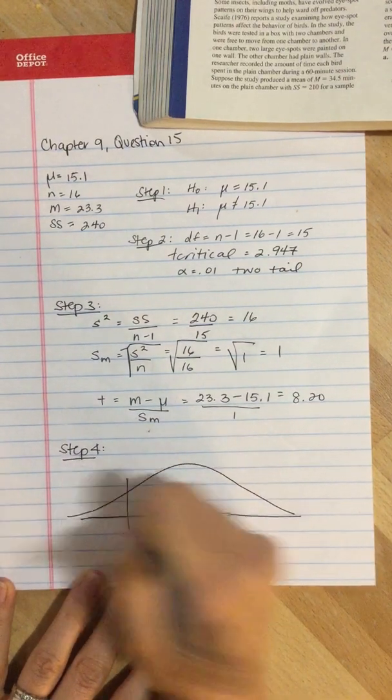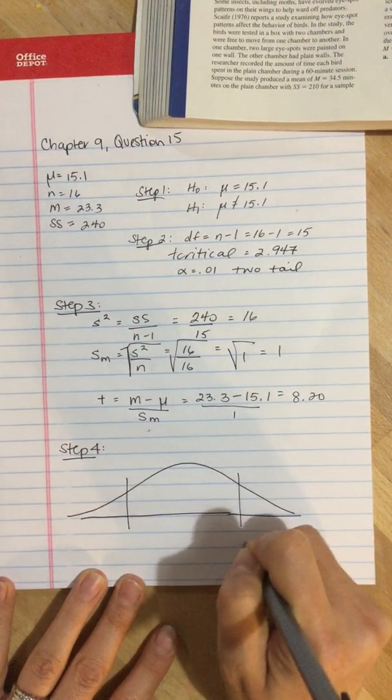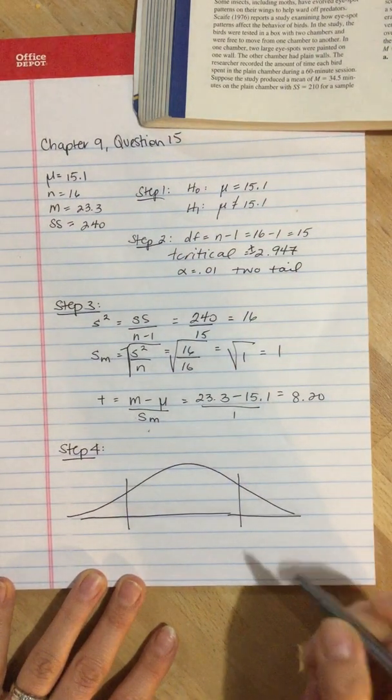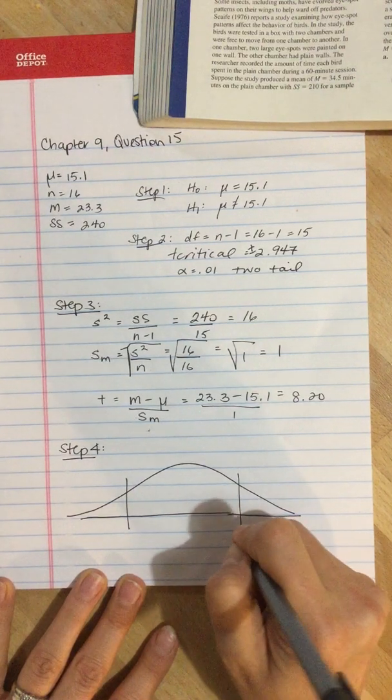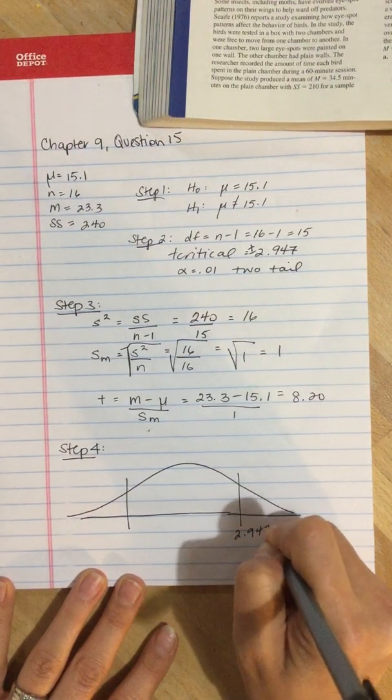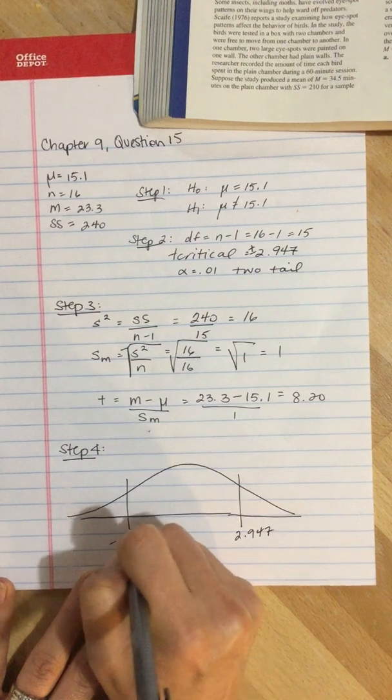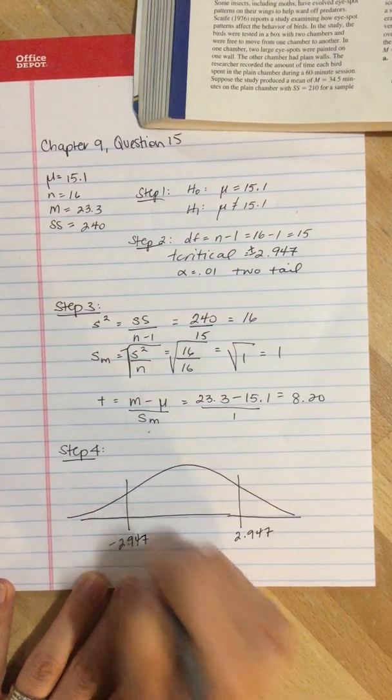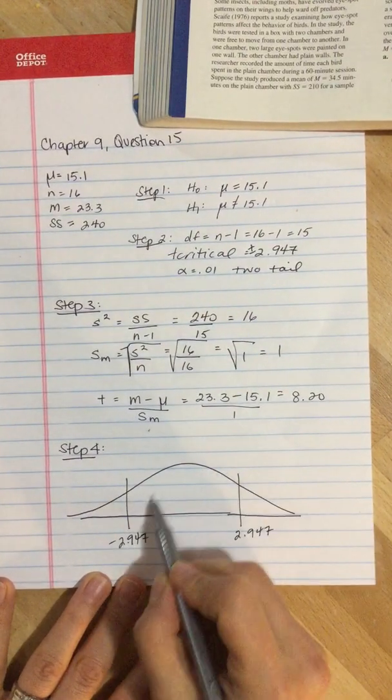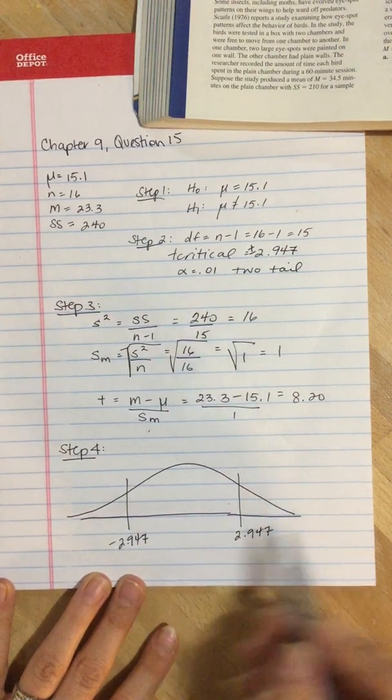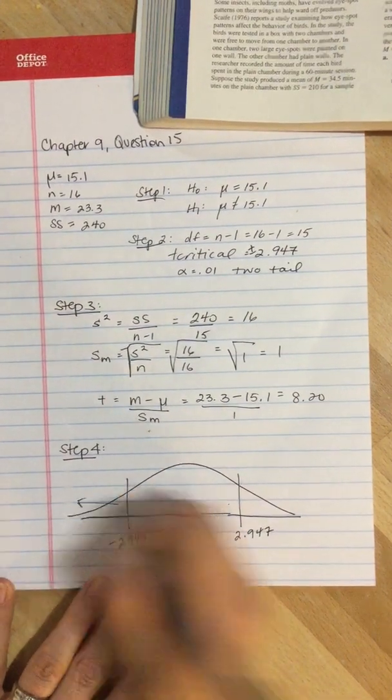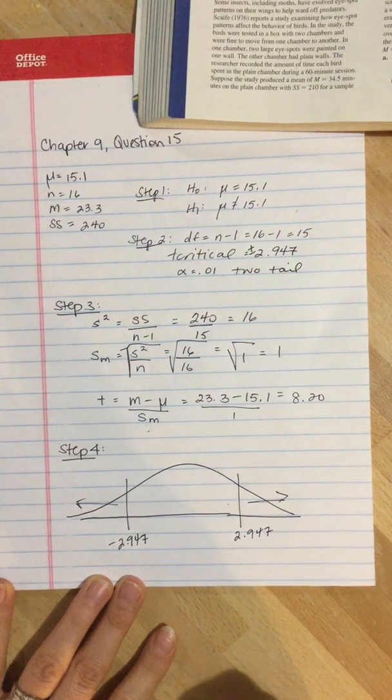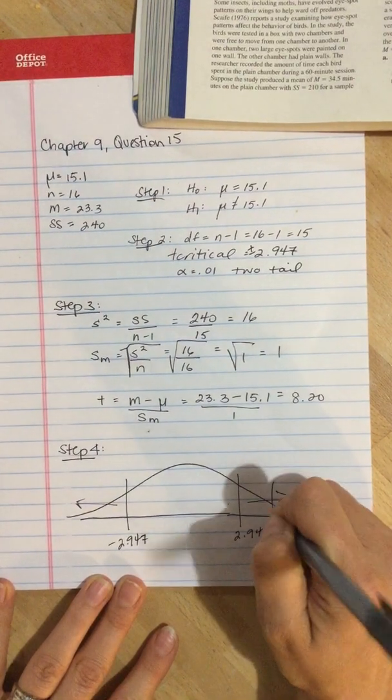So our critical values, this is plus or minus because it's two-tailed. We have 2.947 and negative 2.947. Anything that falls in here is fail to reject, anything that falls out here is reject the null. Our value is here.